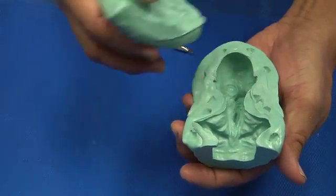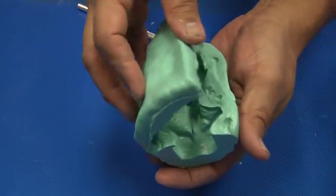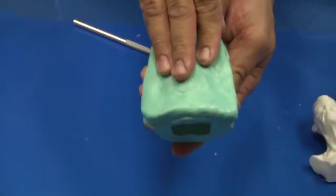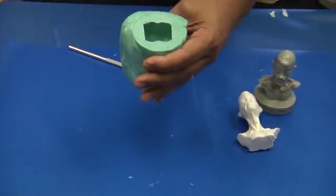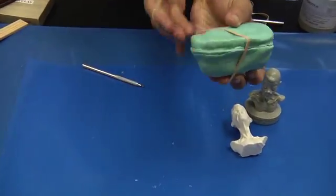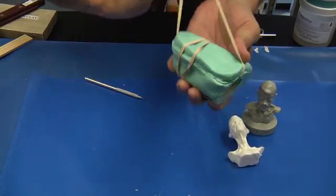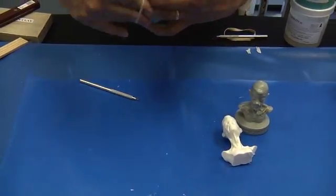I used a tool to basically gouge out some holes. So when I applied the second half of the mold, it created these little bumps. Again, these bumps will align the mold halves together and make it for a nice tight registration.